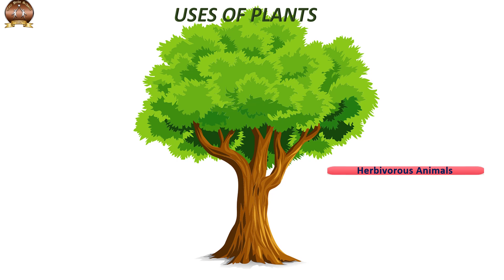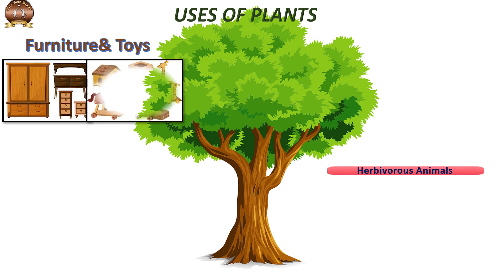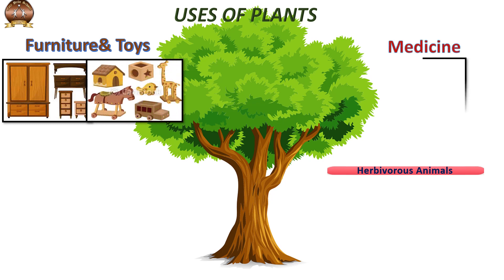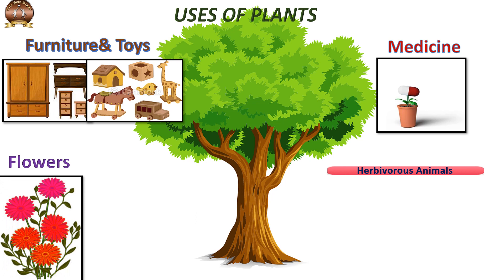As we can see on the screen, we can make toys and furniture from the wood. Wood we get from plants and trees. We also get medicine from plants and trees, and we get flowers, fruits, and vegetables from plants and trees.